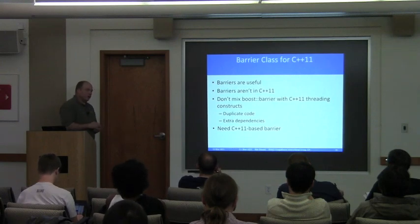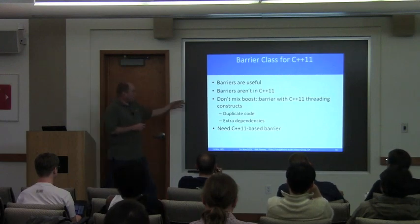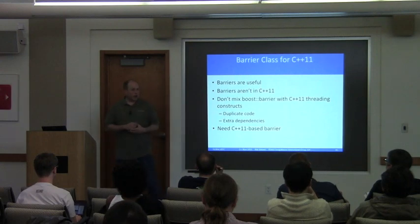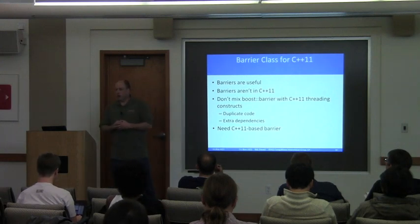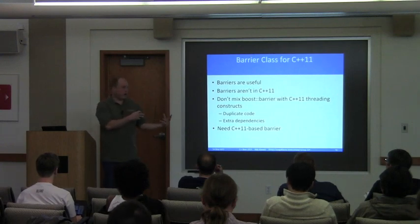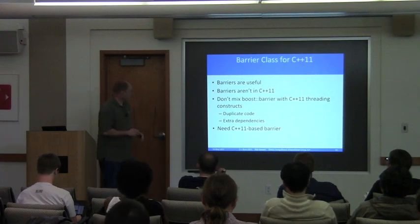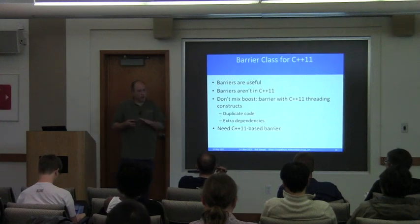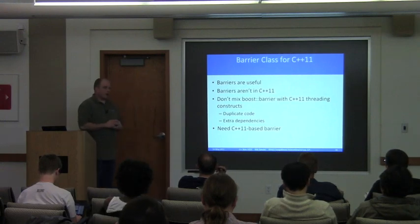Barriers are quite useful, but you don't have them in C++11. You might be tempted to use boost::barrier alongside standard library code, but barrier is implemented in terms of mutex and condition variable. So you'd be picking up pieces from the boost threads library in addition to those from your standard library — a bit of waste in terms of bloat and dependencies. So we need one for C++11 — let's try making one.